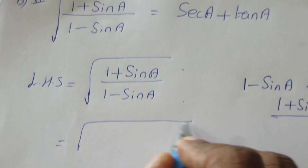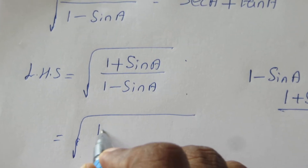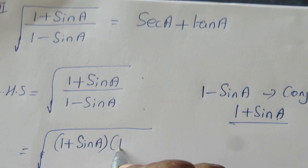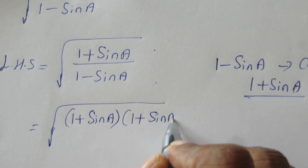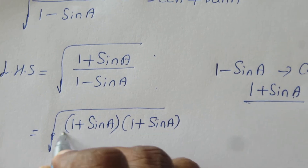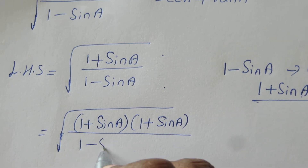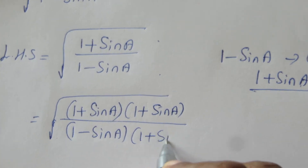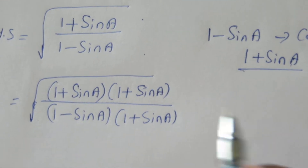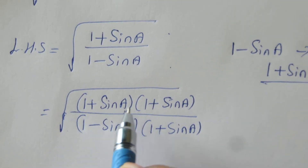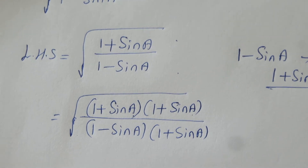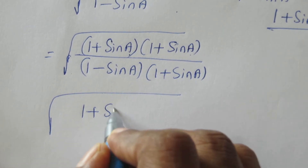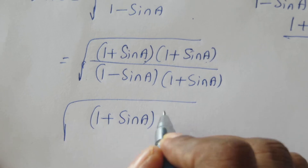So we get square root of (1 plus sin A) into (1 plus sin A) divided by (1 minus sin A) into (1 plus sin A). The numerator 1 plus sin A into 1 plus sin A gives us 1 plus sin A whole square.